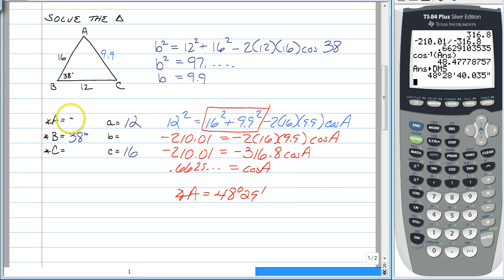So now we have angle A. All we have to do now to find angle C is just 180 minus 38 minus 48 degrees and 29 minutes. Type that in the calculator, and you will find out that your last angle, angle C, is 93 degrees and 31 minutes.